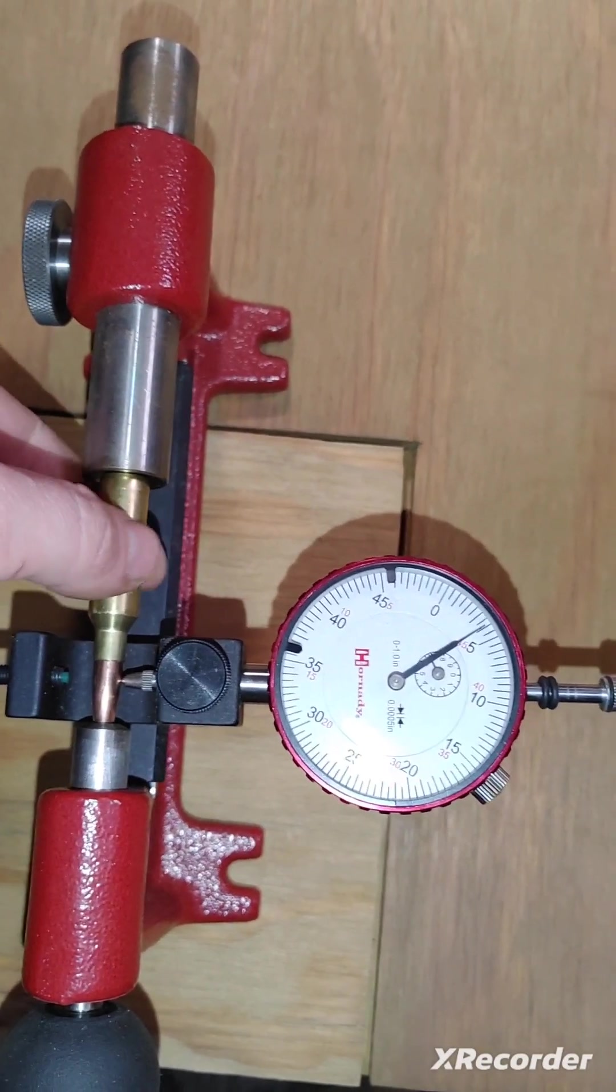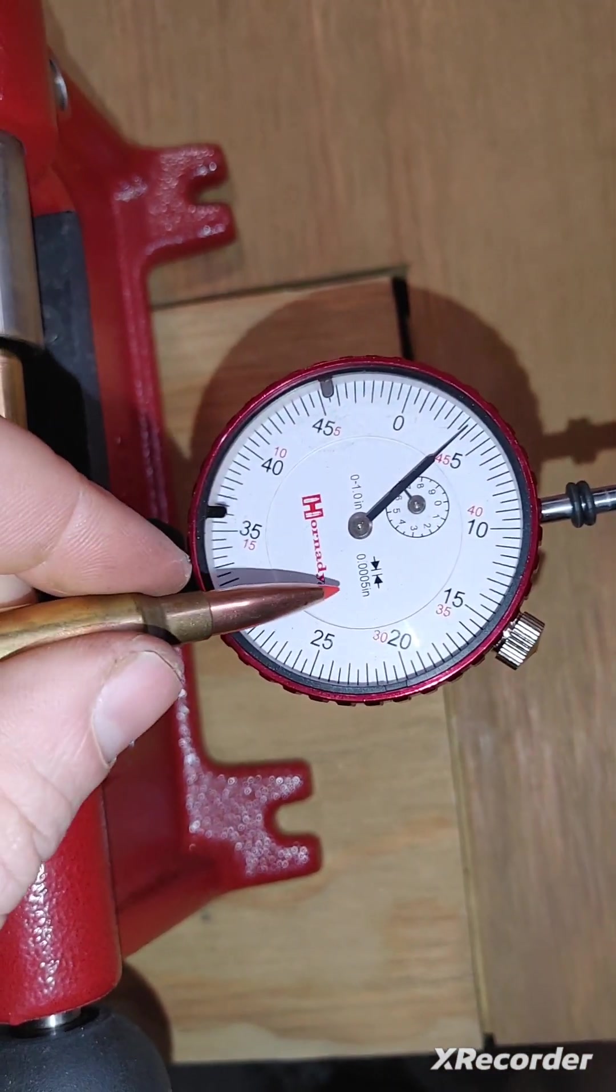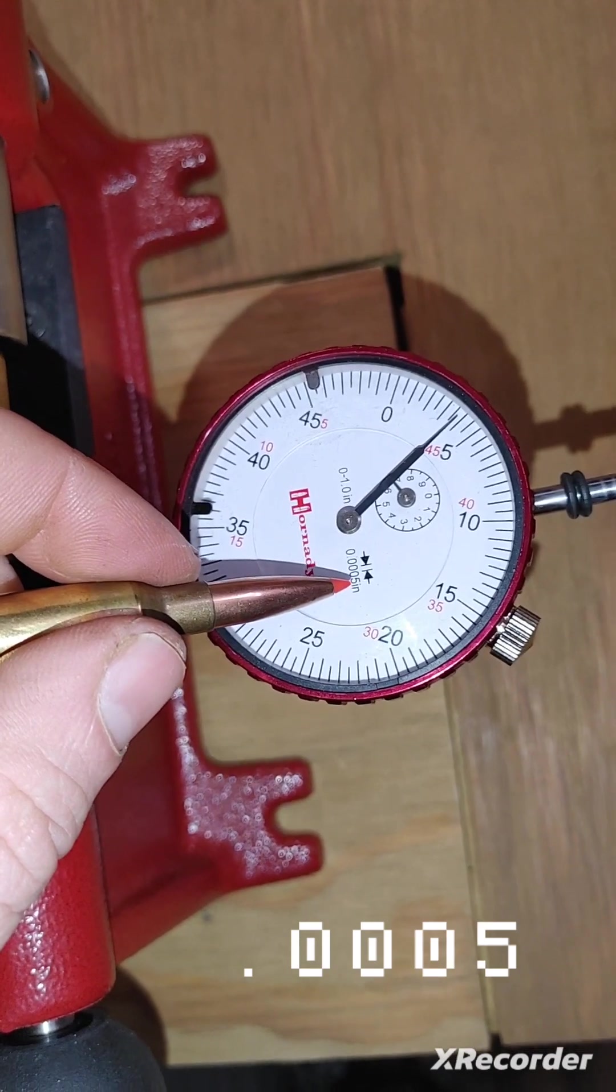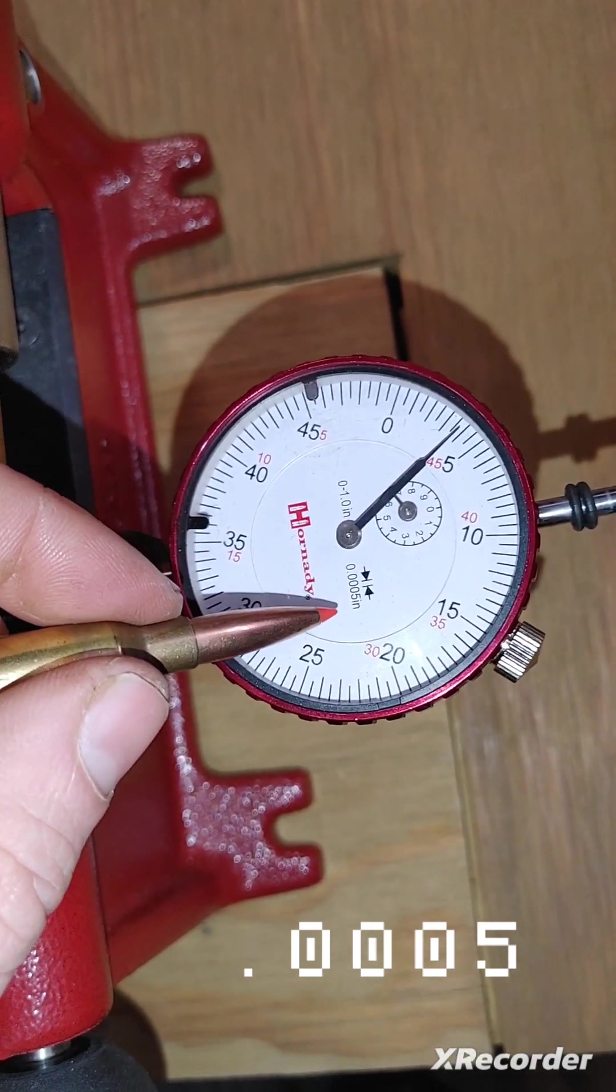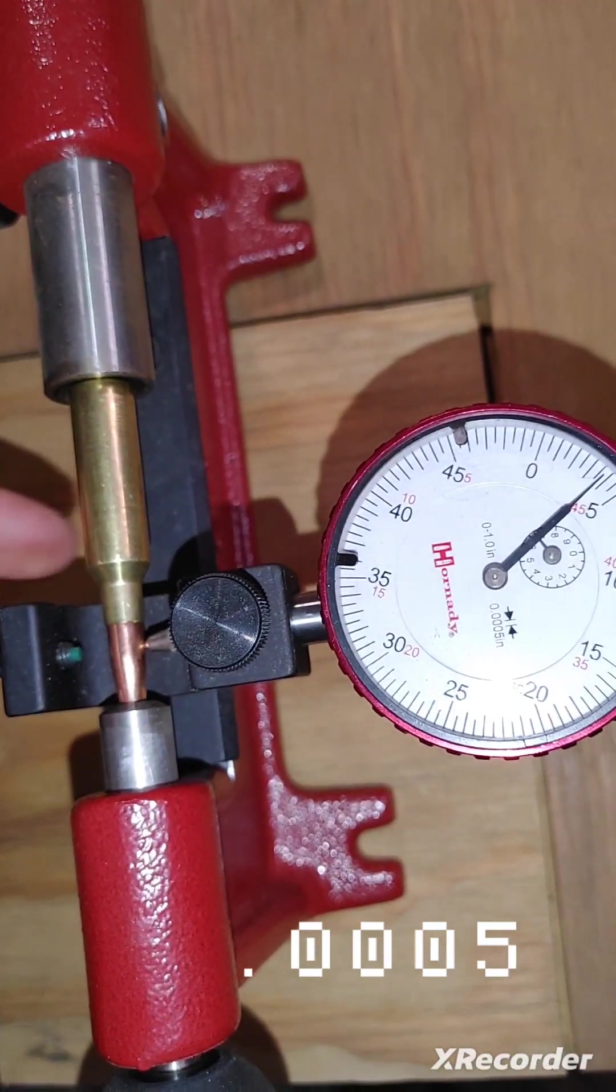It's almost perfect. The thing is with this one too, this one's even more precise than the last one. This dial indicator measures in five ten-thousandths of an inch. So every line is five ten-thousandths of an inch.